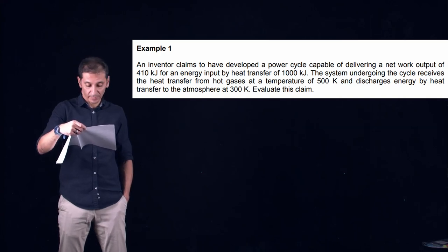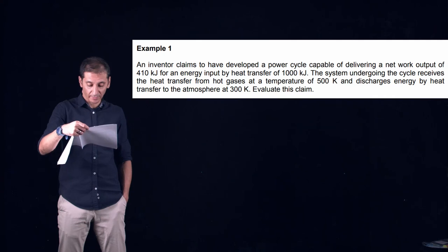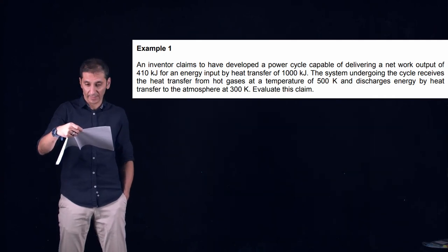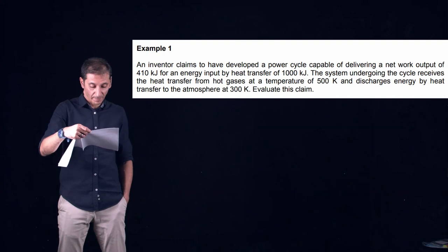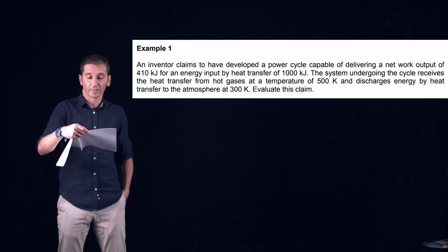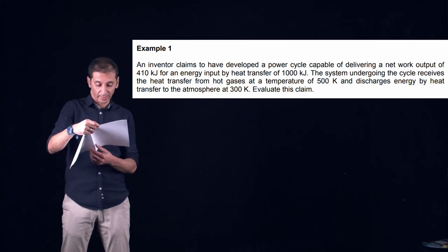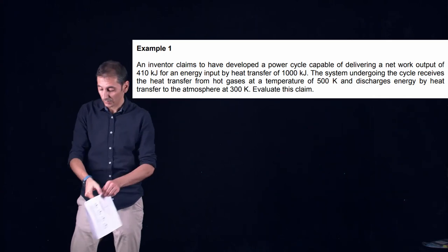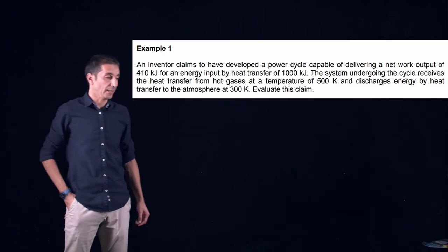So this is our work out for an energy input by heat transfer of 1000 kilojoules. This is our QN. The system undergoing the cycle receives the heat transfer from hot gases at a temperature of 500 K. So this is our TH and discharges energy by heat transfer to the atmosphere at 300 K. So this is our TL and we are asked to evaluate this claim.